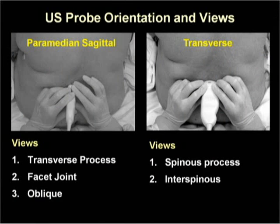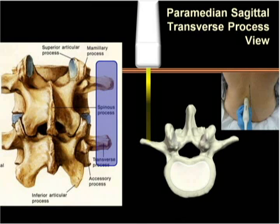The probe may be placed in either a longitudinal paramedian sagittal or transverse orientation. There are five common views that may be obtained and recognized when scanning the spine. Three of these are obtained with the probe in the longitudinal sagittal orientation: the transverse process view, the facet joint view, and the oblique view. Two more views can be obtained with the probe in transverse orientation: the spinous process view and the interspinous view.